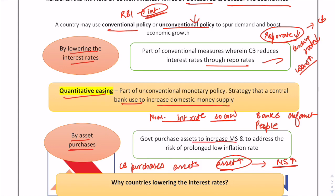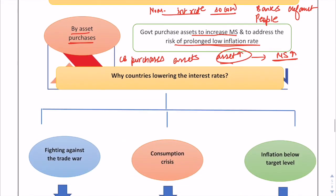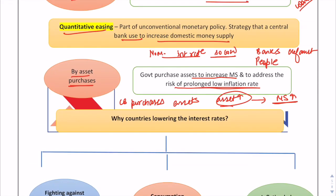The government purchases assets to increase money supply and to address the risk of prolonged low inflation. The net effect of asset purchases is that interest rates in the economy go down along with an increase in money supply. Because as money supply increases, the net effect is that interest rates will go down. So globally, the main focus is to bring interest rates down, and countries are planning to cut them.